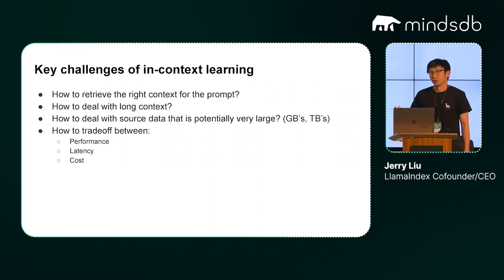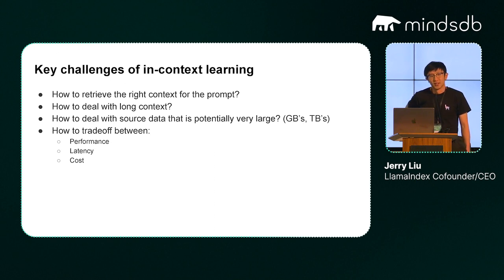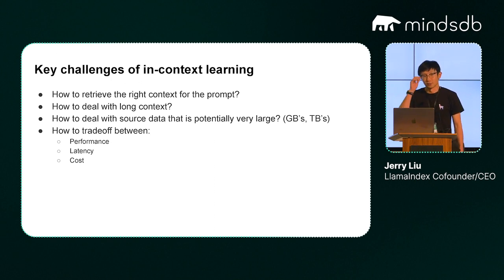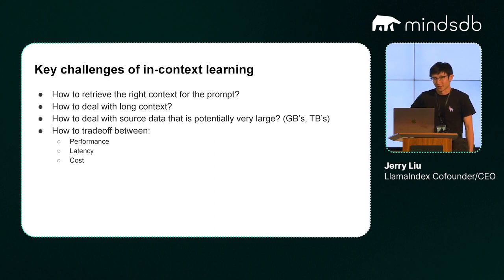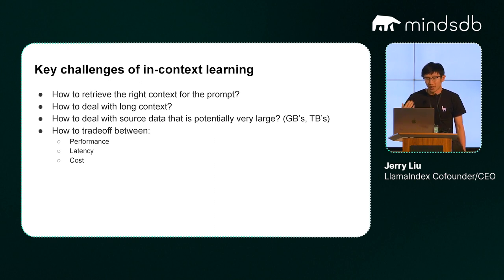How do you deal with overflowing context? How do you deal with a diverse range of different types of data — gigabytes, terabytes of data? How do you trade off between performance and costs? Many of you might already be familiar with these challenges if you've tried to set up some sort of retrieval augmented system on your own, using LlamaIndex, LangChain, or other toolkits. But there is just a lot of complexity here, and that was part of the motivation for a project like LlamaIndex.